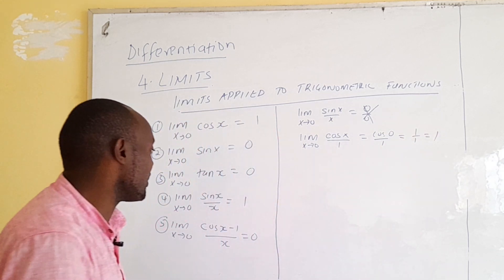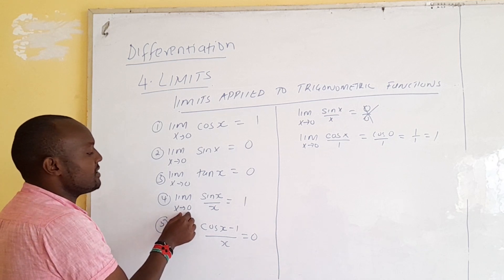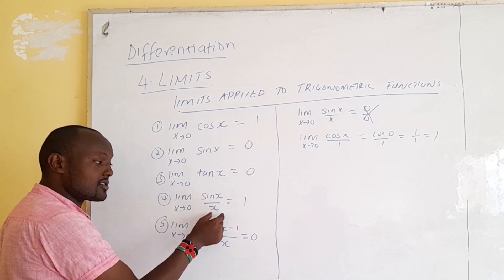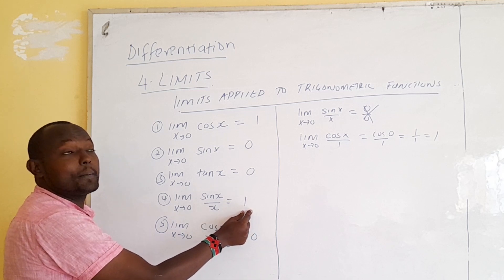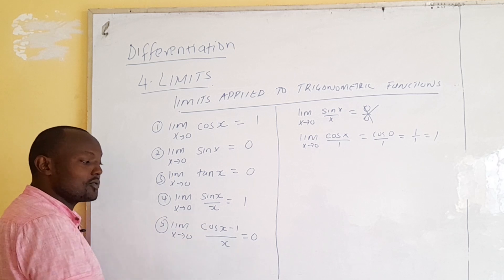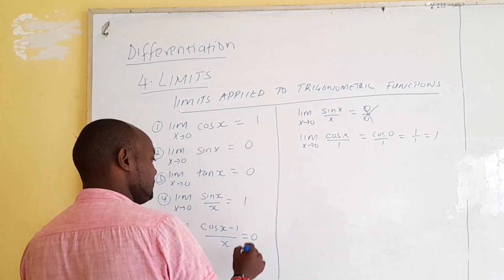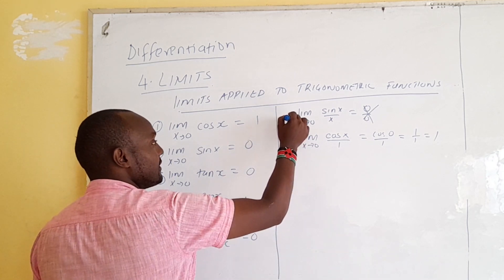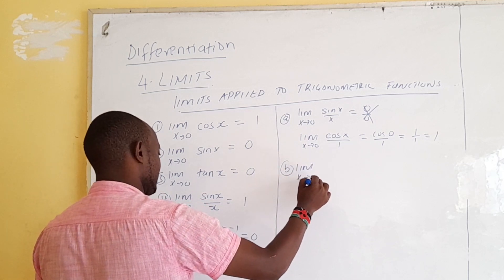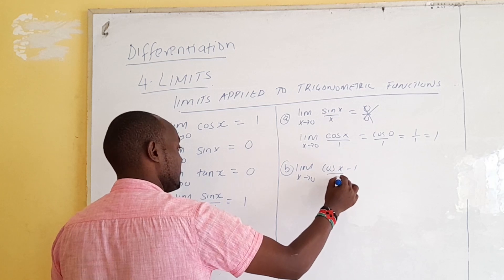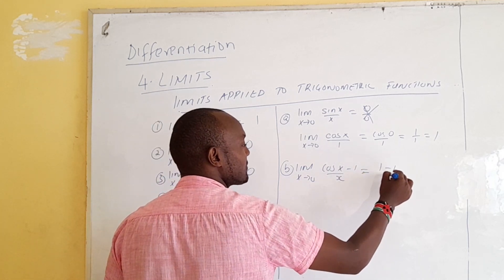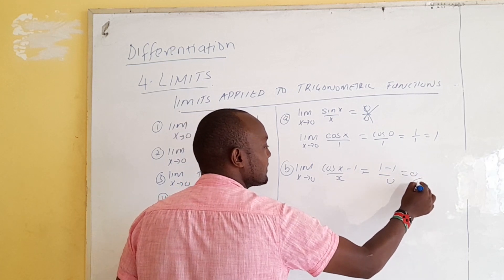Since cos(0) = 1, we get 1/1 = 1. So the limit as x approaches 0 of sin(x)/x equals 1. The same approach applies to the limit of (cos x − 1)/x. Differentiating cos(x) gives −sin(x).